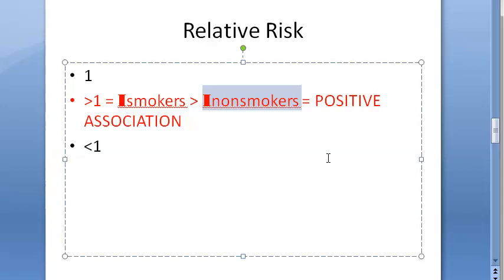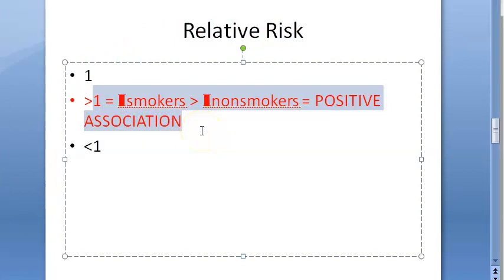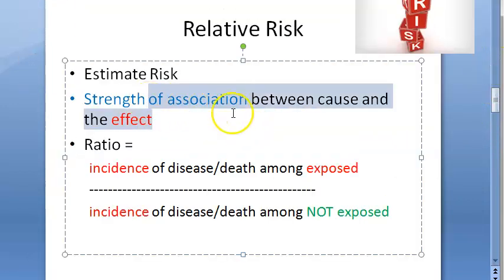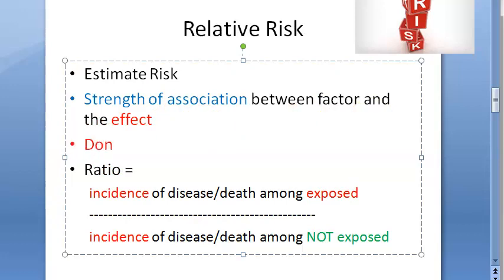Note that we are saying there is a possible association, not necessarily a cause. If relative risk is less than 1, it means there are fewer cases in the exposed group — for example, when many people are vaccinated, the risk of getting the disease is less, so the RR could be less than 1. A higher RR indicates a strong association between the factor and the disease, but it does not imply causation — we don't know the cause.